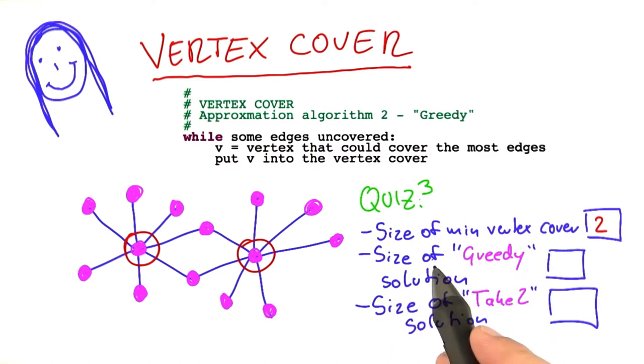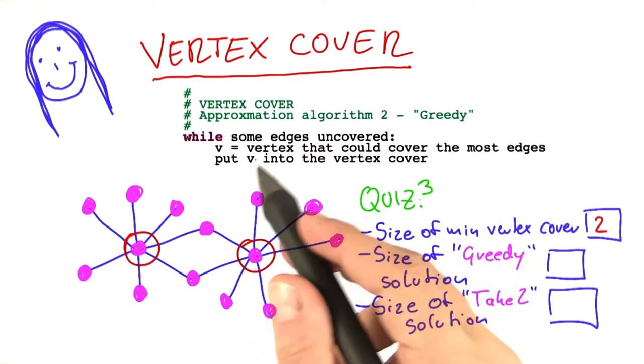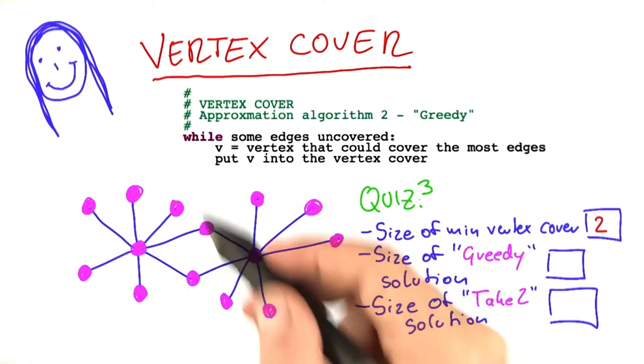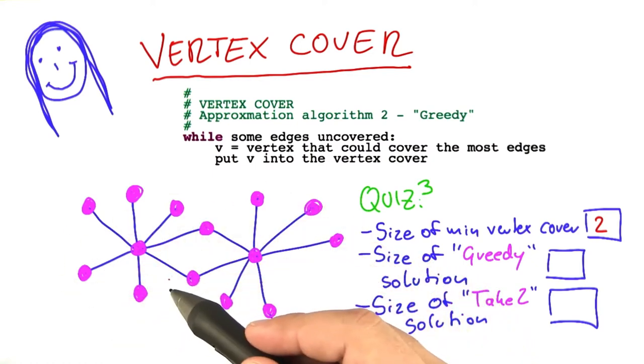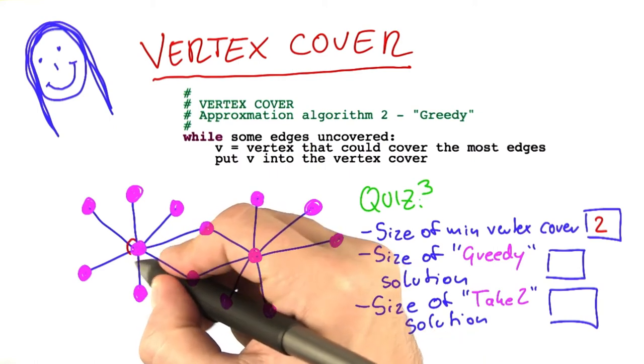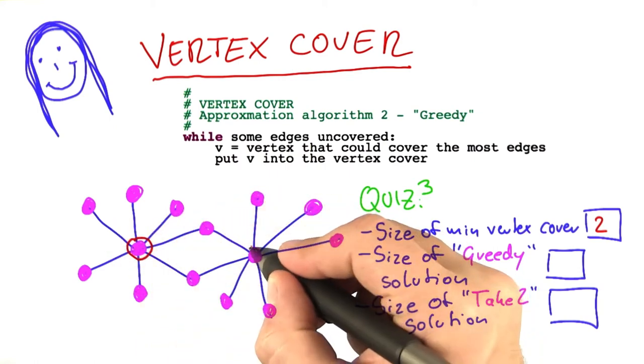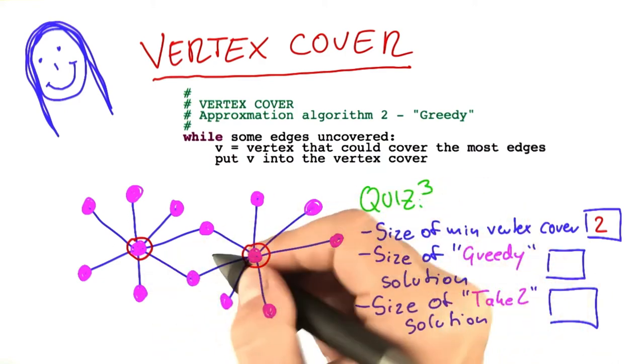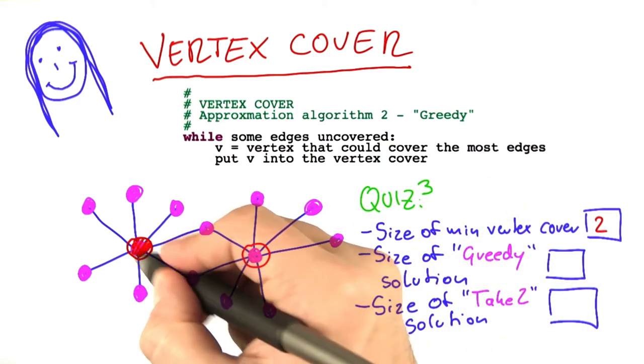And that is also the size of the greedy solution, because what the greedy algorithm will do is look at the whole graph and ask: which vertex could I use to cover the most edges? And actually, this vertex here is next to 7 uncovered edges and this one here as well, so it'll just choose one of them and put that one into the vertex cover.